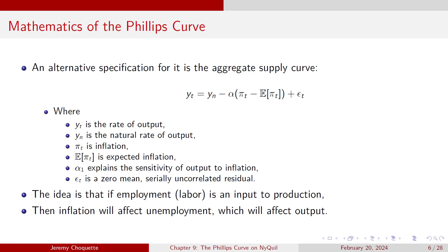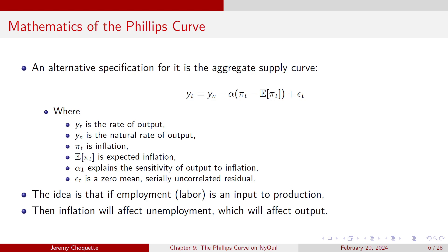In this case, inflation affects output. So we have two different Phillips curves: the first is the tradeoff between wage inflation and unemployment (downward sloping); the second, the aggregate supply framework, is the relationship between inflation and output (upward sloping). High inflation means low unemployment or high output.